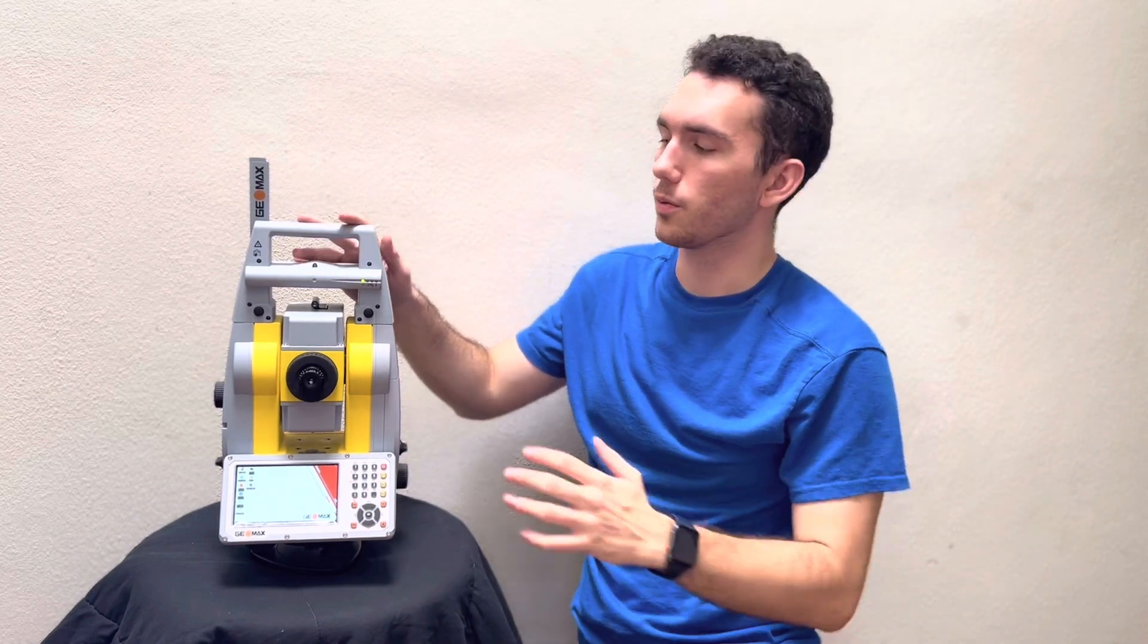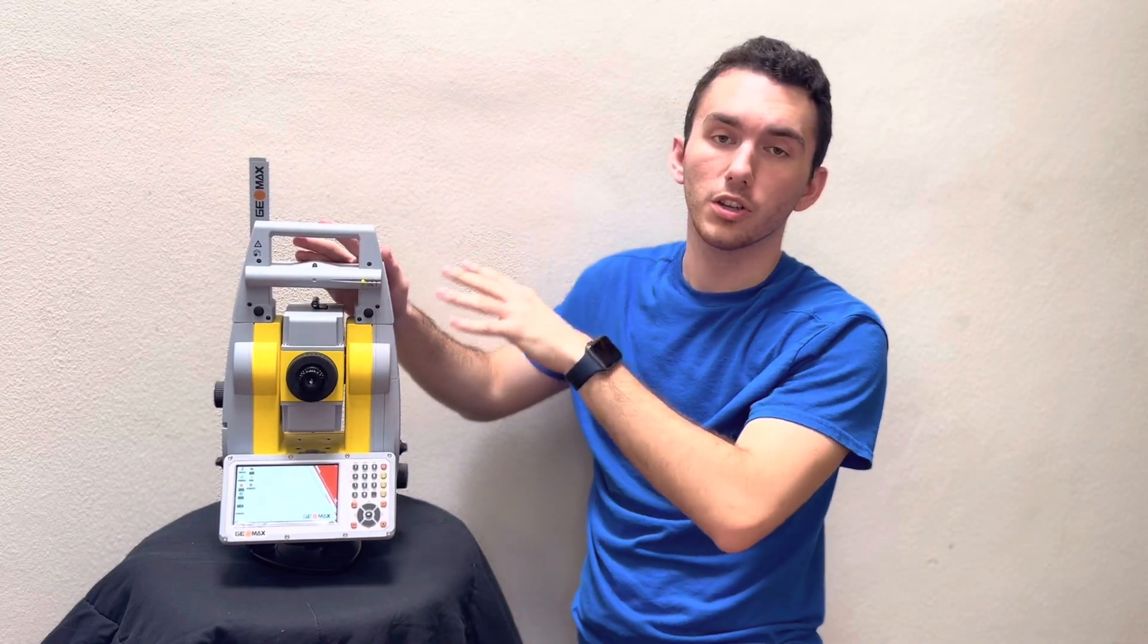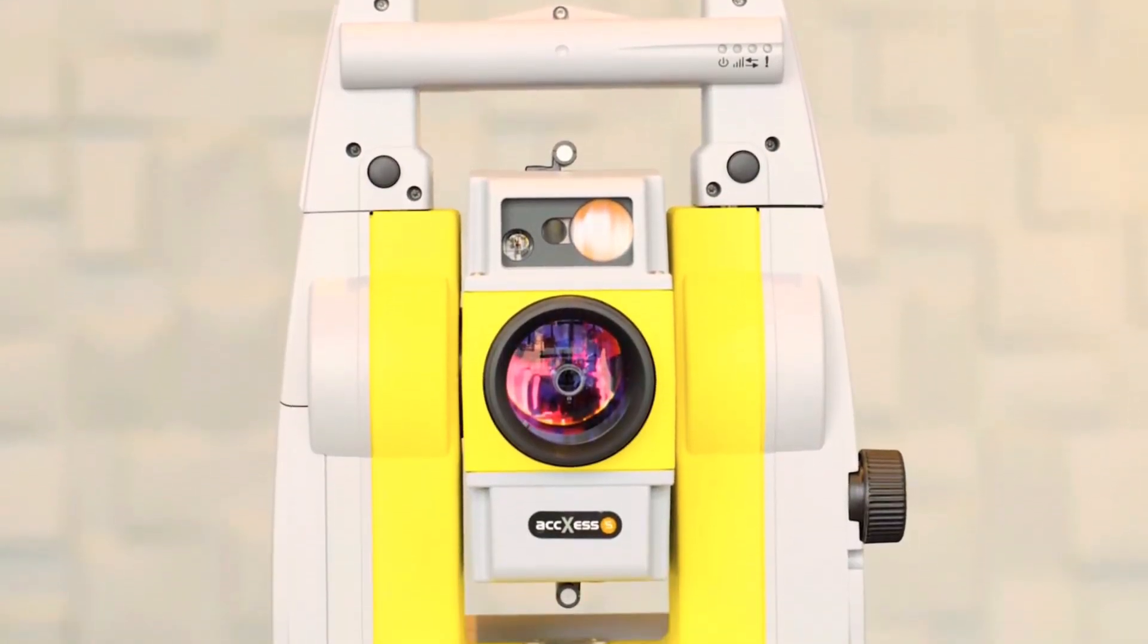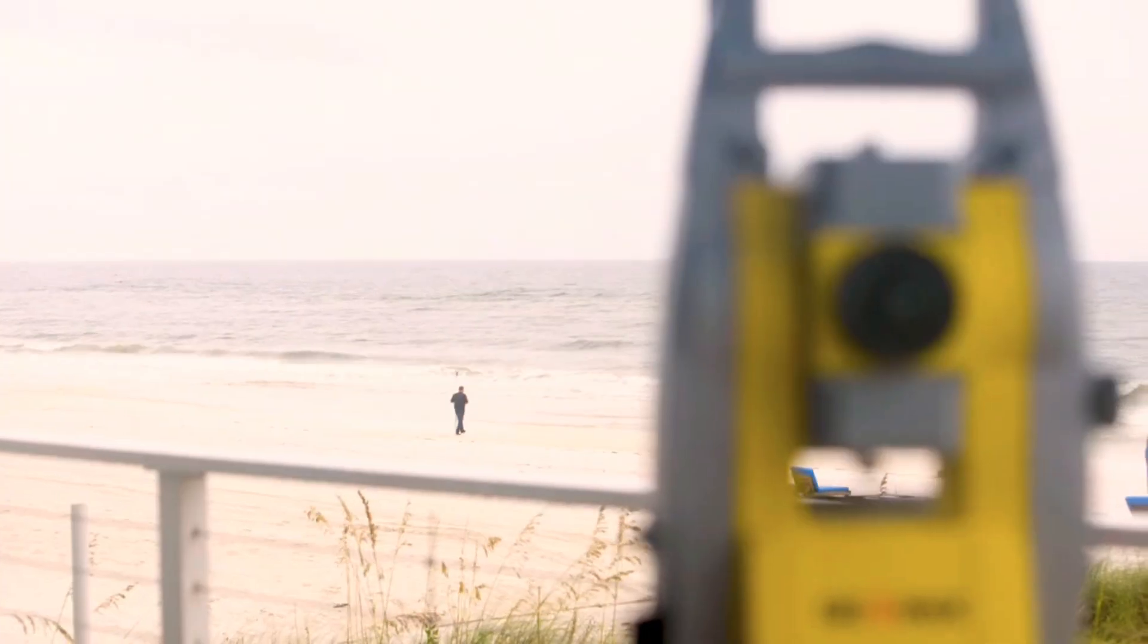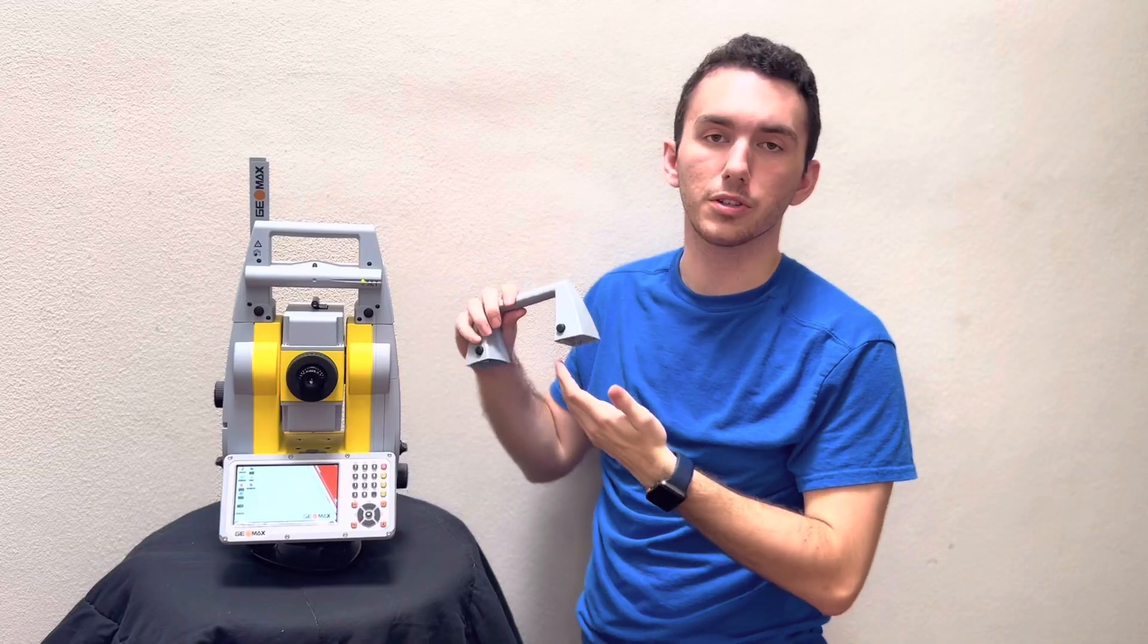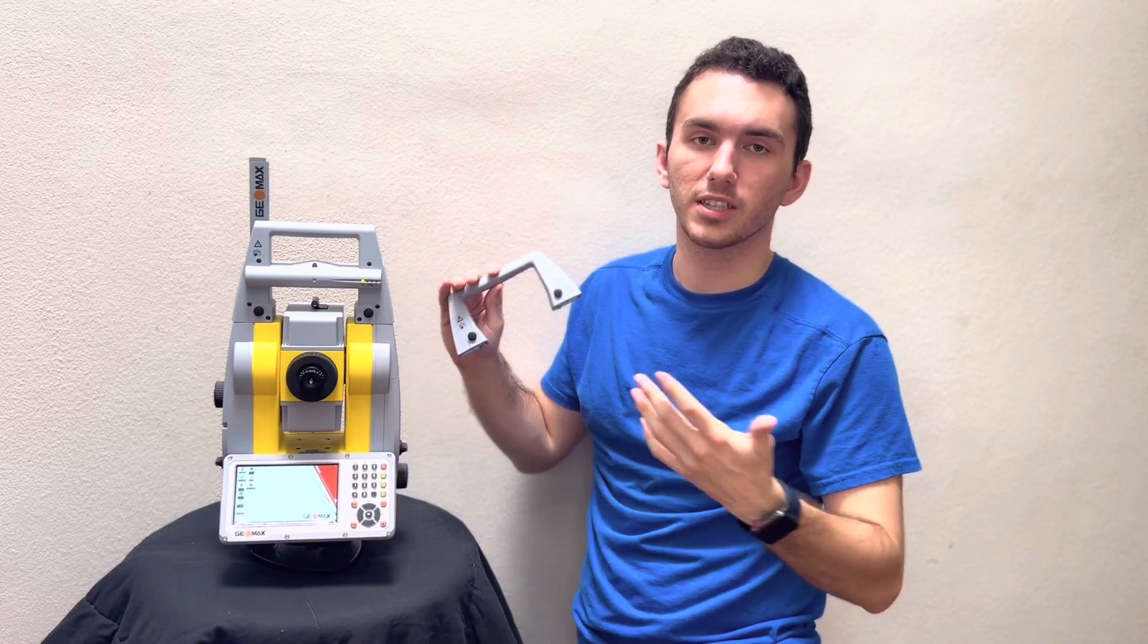As you can see here, we have the Bluetooth handle connected. While using the Bluetooth handle, you can take measurements up to 1,500 to 2,000 feet. And for whatever reason, if you have the other handle connected, which is non-Bluetooth, you can still get measurements from 600 to 700 feet.